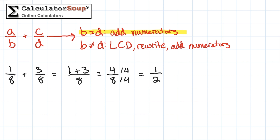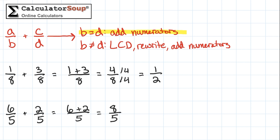Next, let's add the fractions 6/5 plus 2/5. Again, add the top numbers together and put the result over the common denominator. 6 plus 2 is 8, so place the 8 over 5 for our answer of 8 fifths. We can also change this fraction to a mixed number. Divide the numerator by the denominator using long division with remainders. 8 divided by 5 is 1 remainder 3, so write down 1 as the whole number result and use 3 as the new numerator over 5. Our final simplified fraction is 1 and 3 fifths.